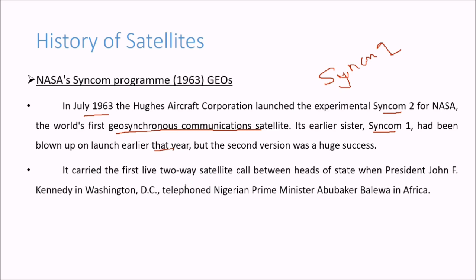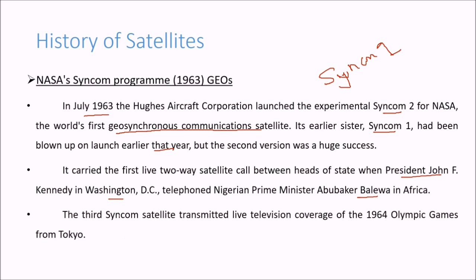It carried the first live satellite call between heads of state when President Kennedy in Washington DC telephoned Nigerian Prime Minister Belewa in Africa. The third Syncom satellite transmitted live television coverage of the 1964 Olympic Games from Tokyo.